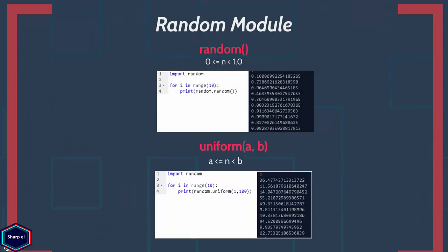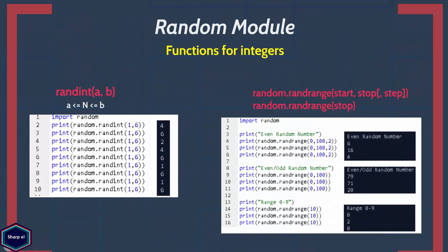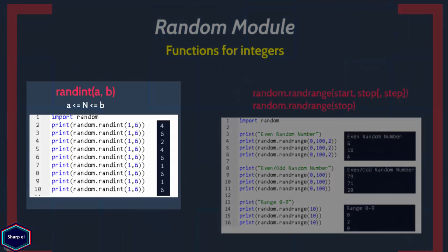Now let's look at the functions for integers. The randint() function takes two integers as arguments and returns a random integer n that falls between these two numbers. Using randint() you can simulate a die, as shown in this example.